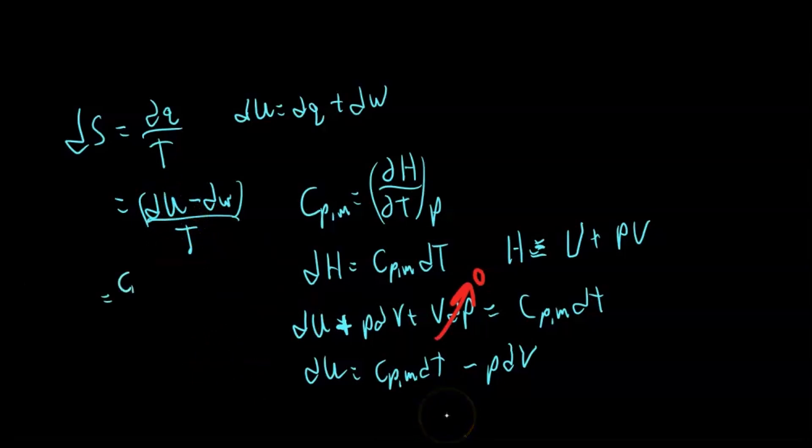So Cp,m dT minus pdv minus dw, and dw is negative pdv. This is all in the numerator over the temperature. We have negative pdv and positive pdv, so these two cancel out.